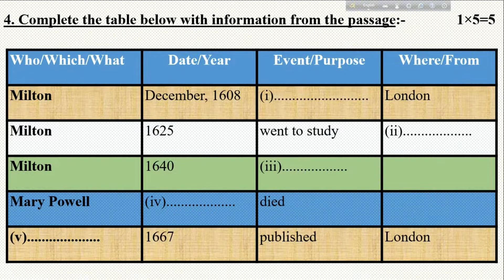Here are five gaps in the table where you have to place the right answer by reading the passage above. The titles give hints — that means how or in what way you have to write. First of all, 'Subject' — that means who, which, what. Then 'Date or Year' — that means time; here you have to write the answer to 'when.'